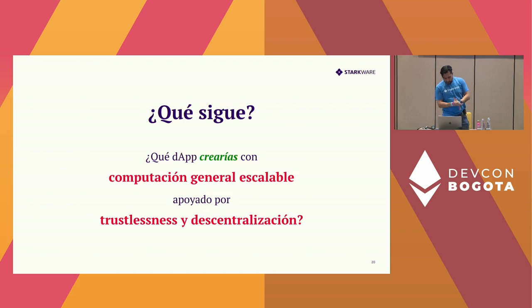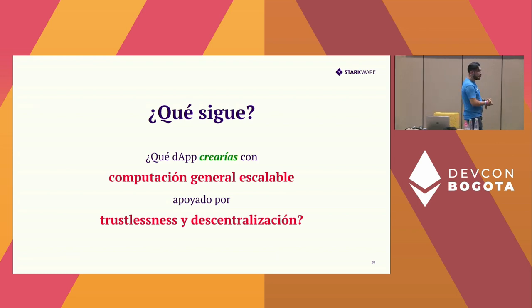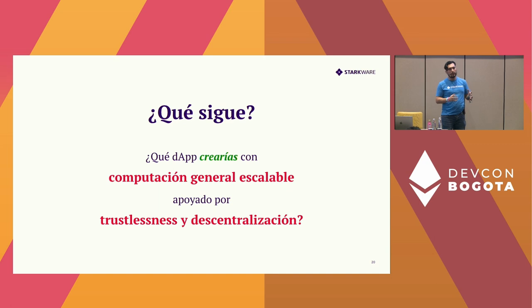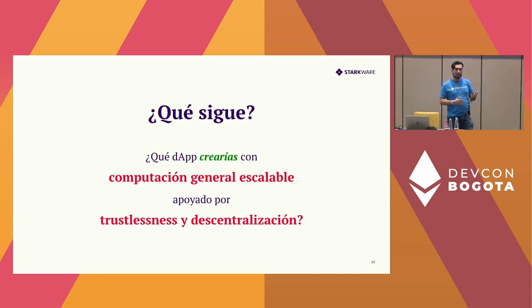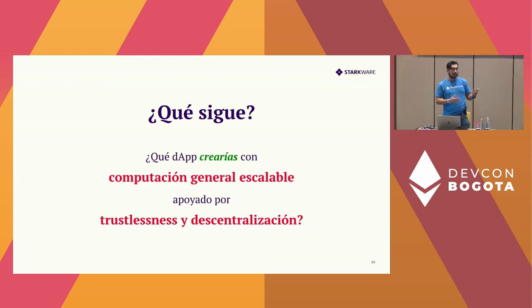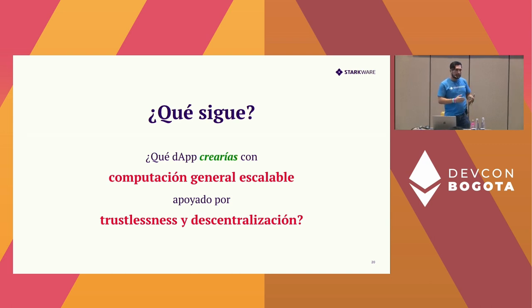The question is: what can you create that is completely different from what has been created on layer one, using all this new power in layer two? For example, you can do machine learning on-chain, train models on-chain, create any kind of mathematical operations on-chain. It's completely different, and what we need is people who start building these eye-opening applications.